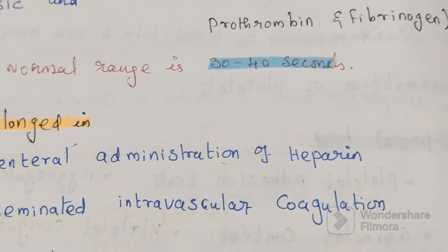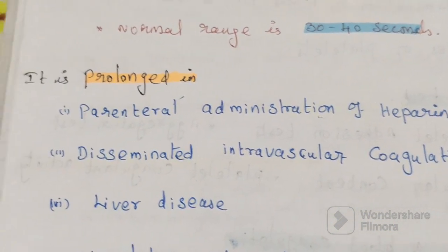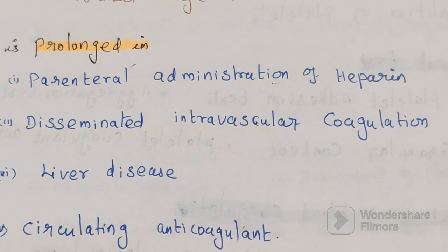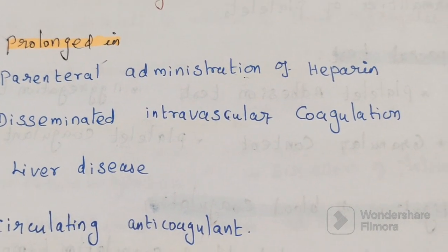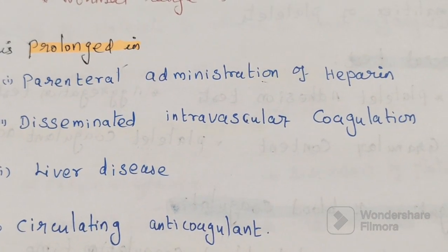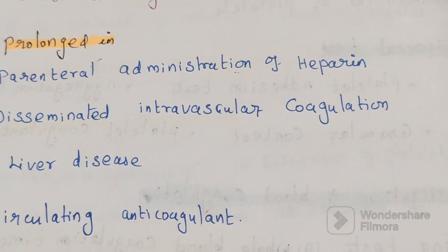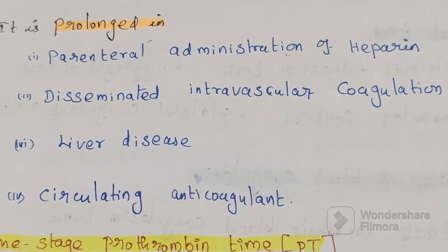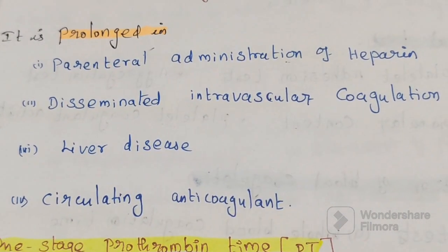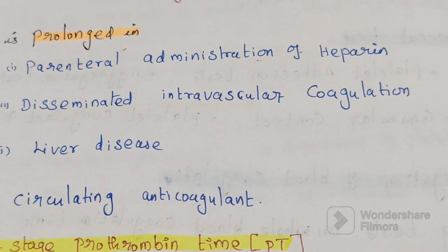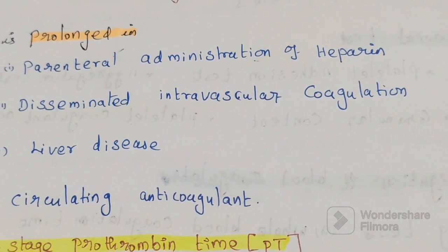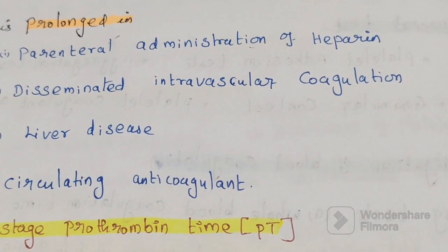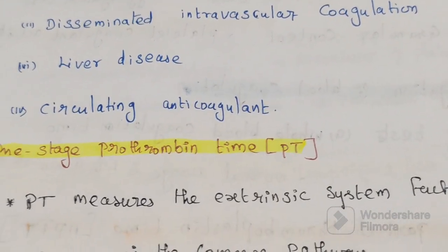The normal range for APTT is 30 to 40 seconds. It is prolonged in: parenteral administration of heparin, disseminated intravascular coagulation (DIC), liver disease, and circulating anticoagulants.